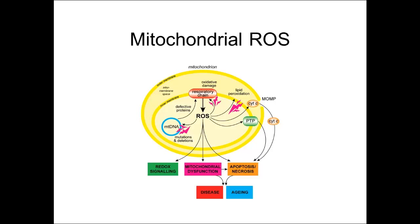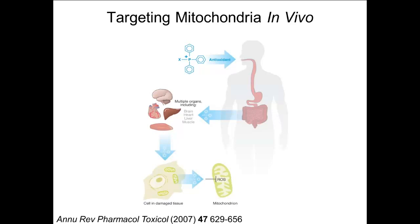What we can do is target probes — indicated by X — by conjugating them to lipophilic cations. The lipophilic cation we use most often is triphenylphosphonium: a phosphorus atom with three benzene rings around it. This has the property of being dragged into cells and into mitochondria because of its positive charge, and it accumulates inside mitochondria — maybe a thousandfold higher inside the mitochondria than elsewhere in the cell.